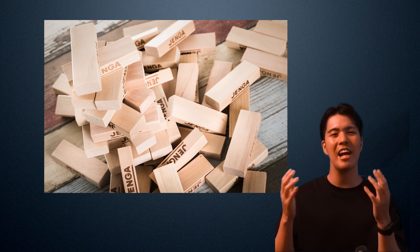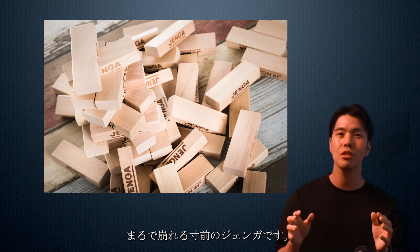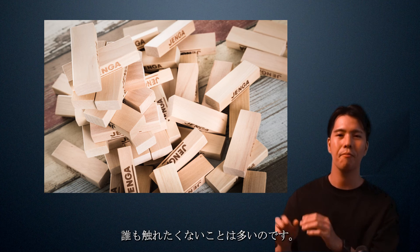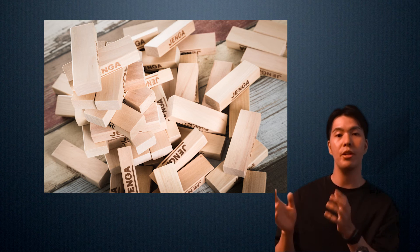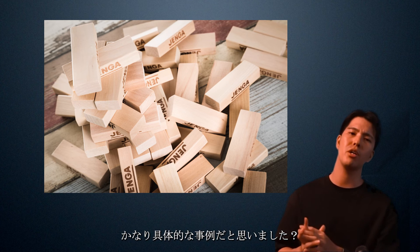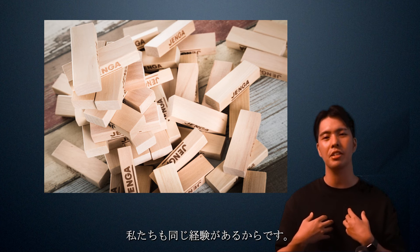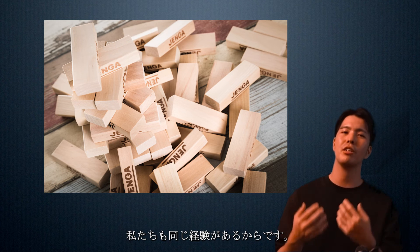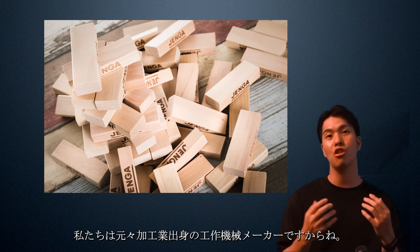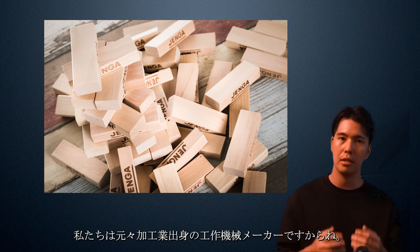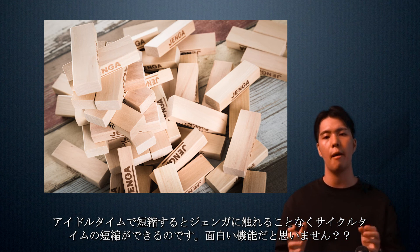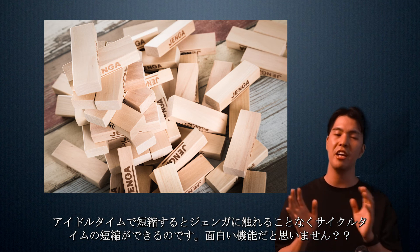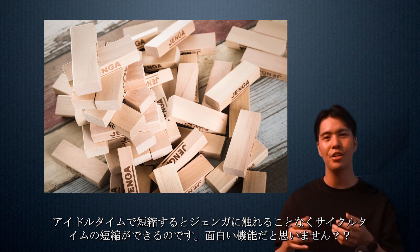Machining is sometimes a delicate balance. It looks like a Jenga tower on the verge of collapse — nobody wants to touch it. Did you think that was a pretty concrete example? That's because we have the same experience. We are a machine tool manufacturer originally from the job shop, making machine parts. If we shorten the cycle time with idle time, we can shorten the cycle time without touching the Jenga.